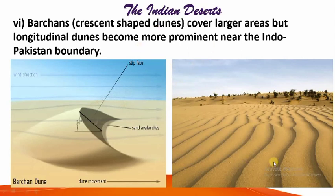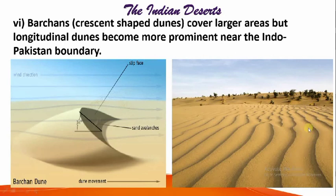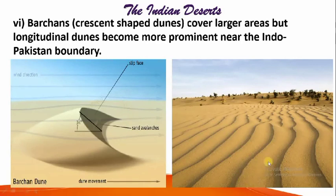The next picture shows longitudinal dunes, another kind of dune very common in the Indo-Pak boundary areas. These are long, continuous, parallel dunes. In between them, the wind blows in a circular motion, eroding the sand on both sides. That is why this elongated feature is formed, and it is very common along the Indo-Pak boundary area.